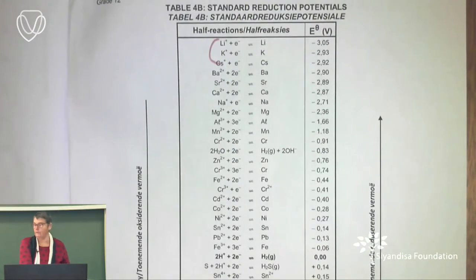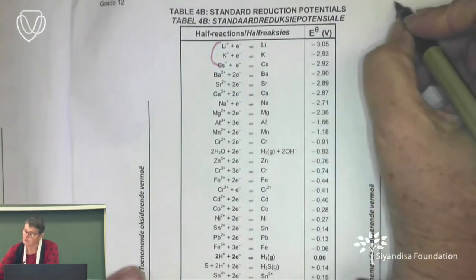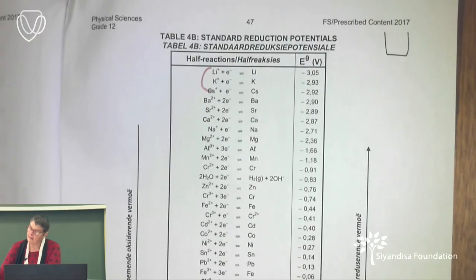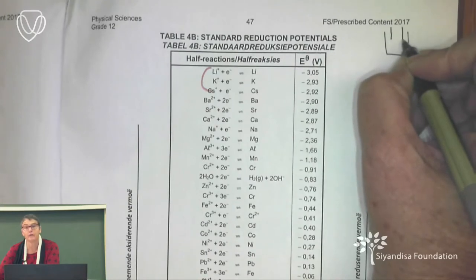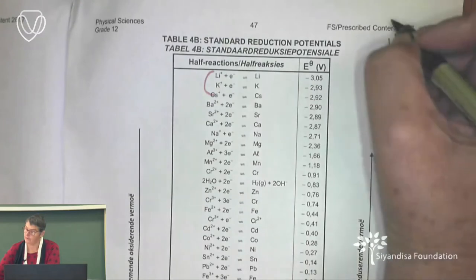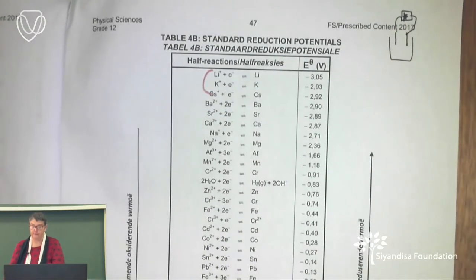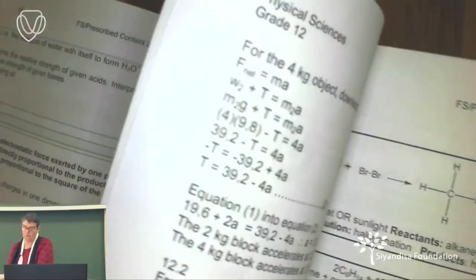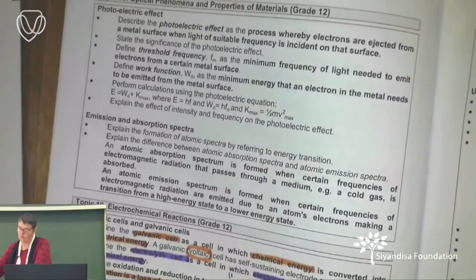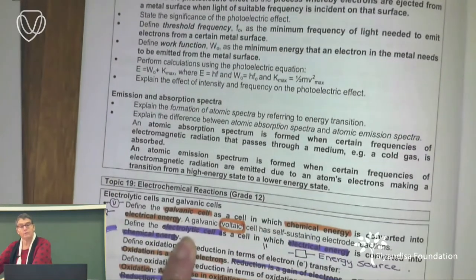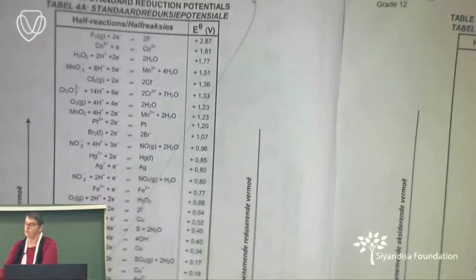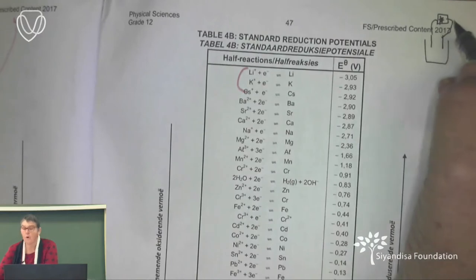Now what crib notes are we going to write for ourselves? I'm going to draw a little beaker, and in that beaker I'm going to have two electrodes — electrodes help with conductivity. I'm going to have an electrical source, because the definition says an electrolytic cell is a cell in which electrical energy is converted into chemical energy, so we must have some form of electricity.